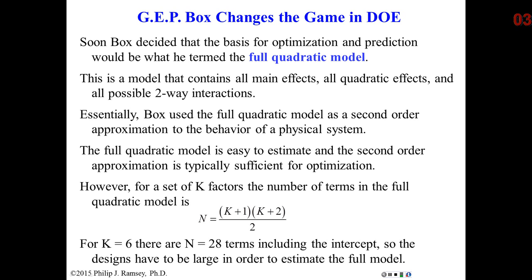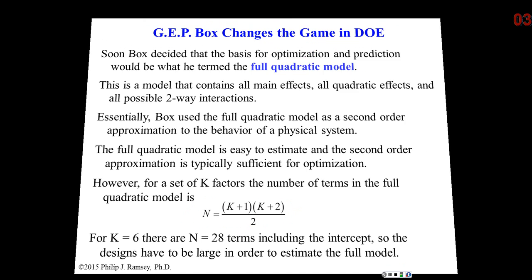However, these full quadratic models can require a lot of terms. The total number of terms in a full quadratic model is given by the following formula. As an example, if k were 6, 6 factors, the model has 28 terms. As a result, in terms of estimation, one would need a rather large model and a rather large design to support that model.